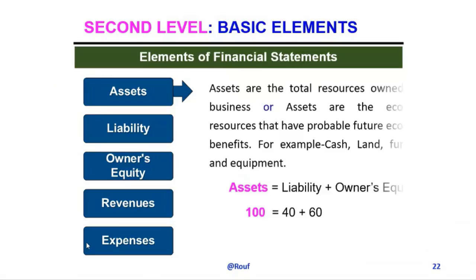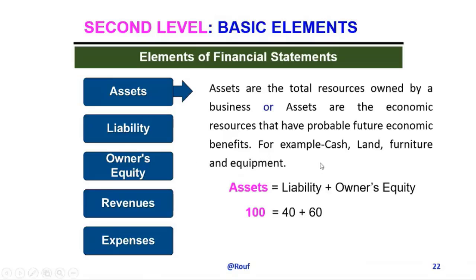What is an asset? Assets are the whole resources owned by an organization or business, or assets are the economic resources that have probable future economic benefits. For example: cash, land, furniture, building, equipment, etc. In this equation: asset 100 taka, liabilities 40 taka, and owner's equity 60 taka. Here, asset indicates the total resources.